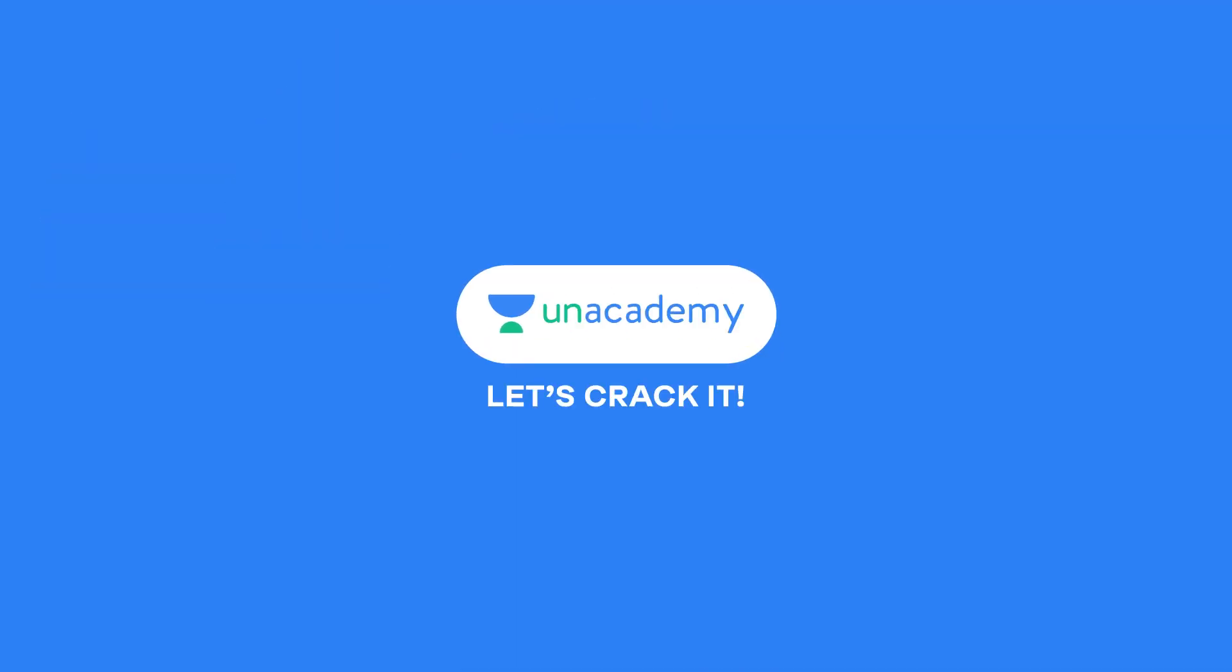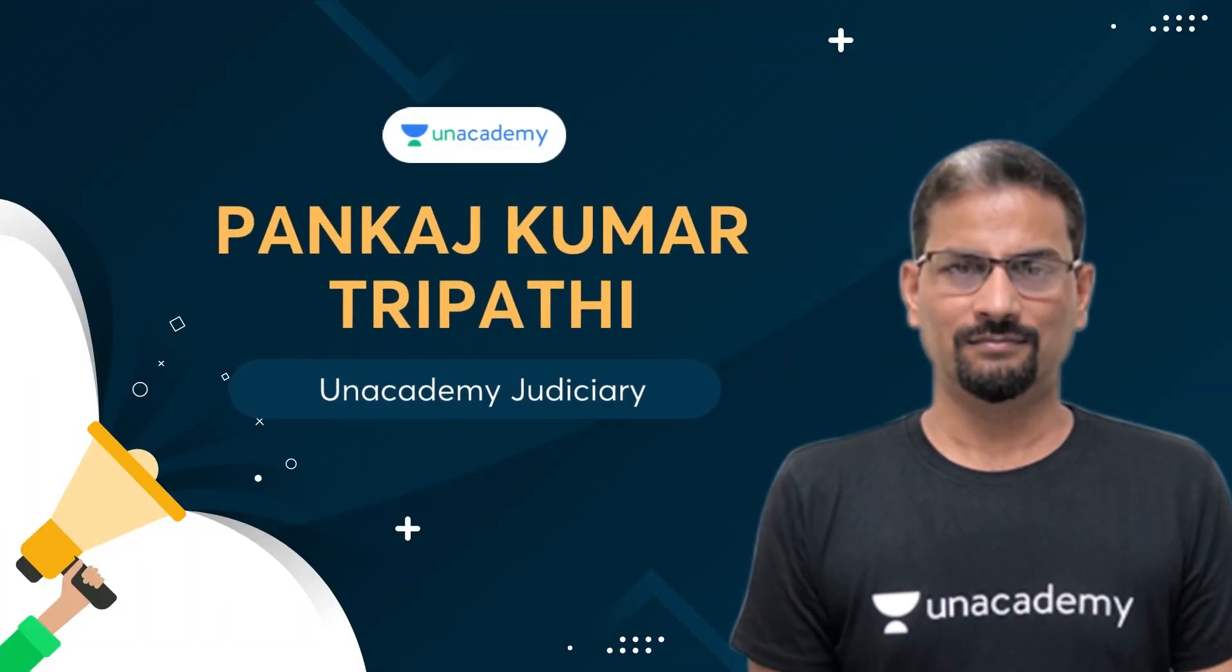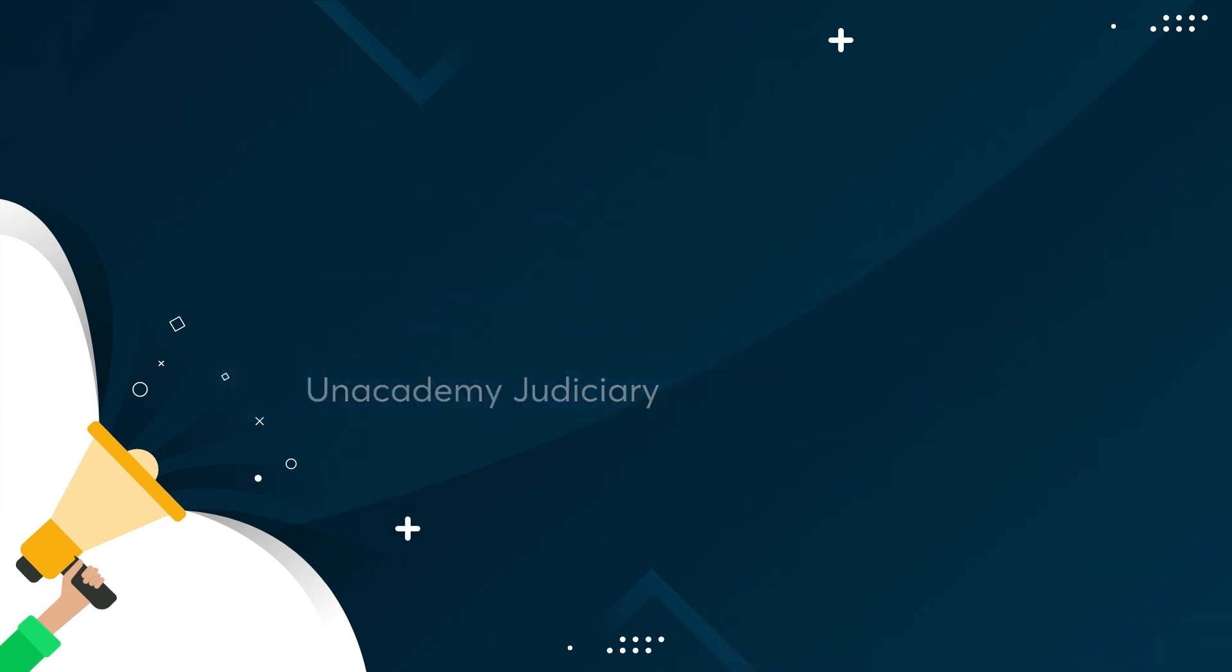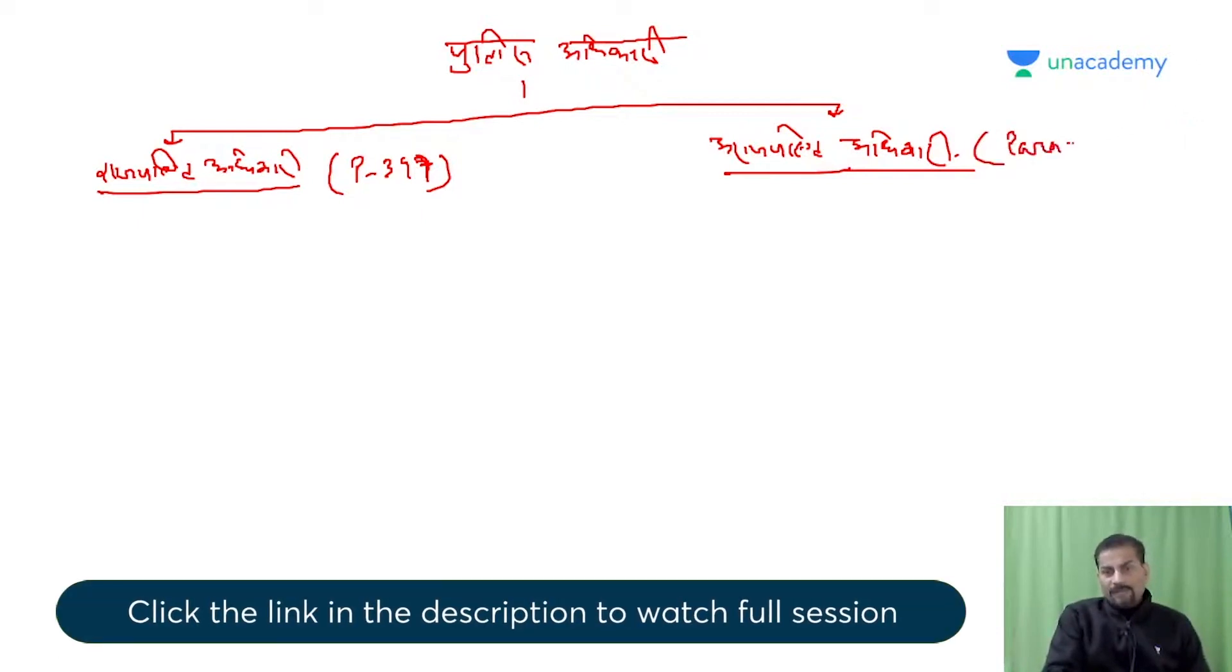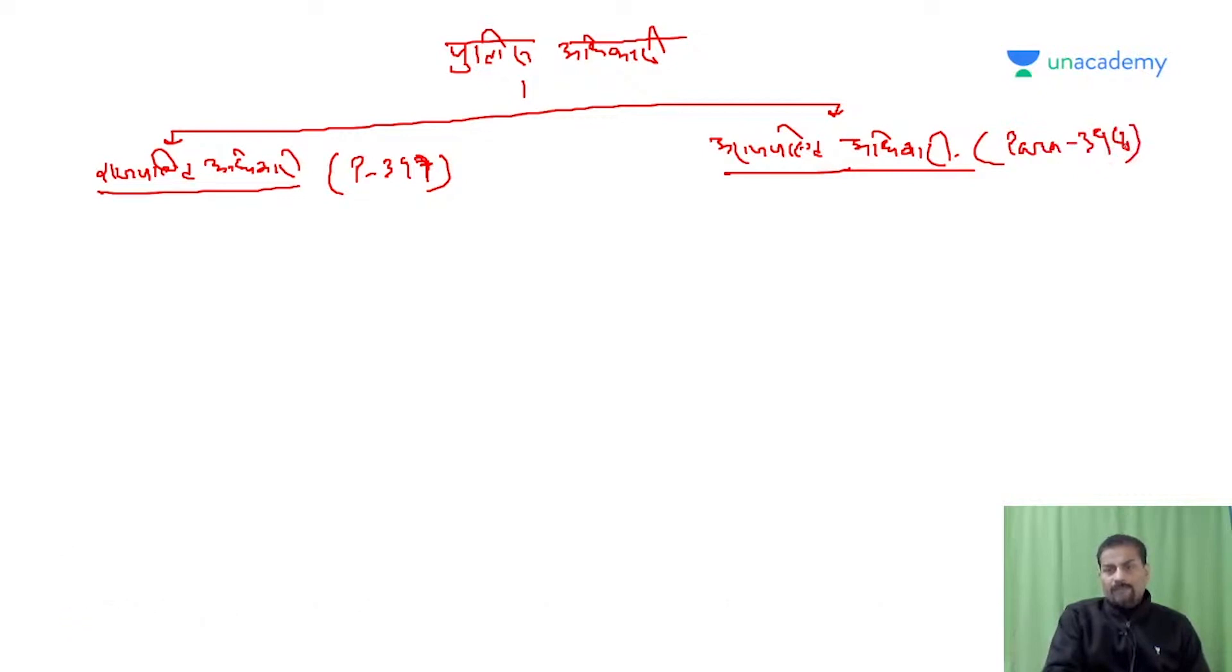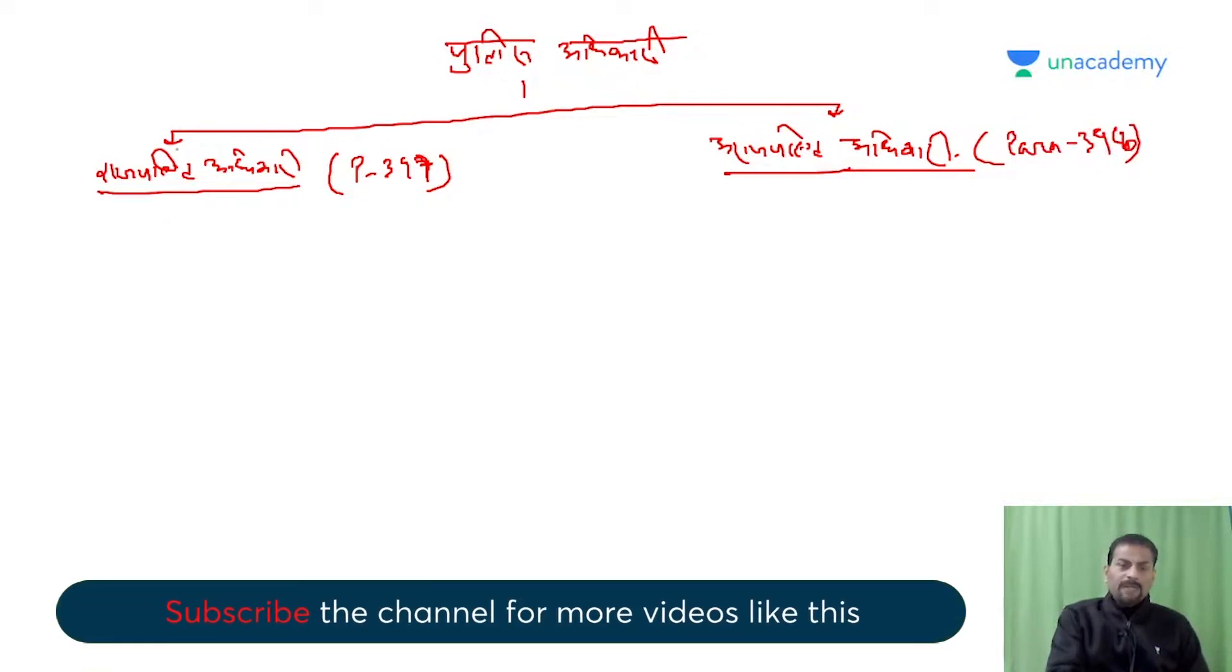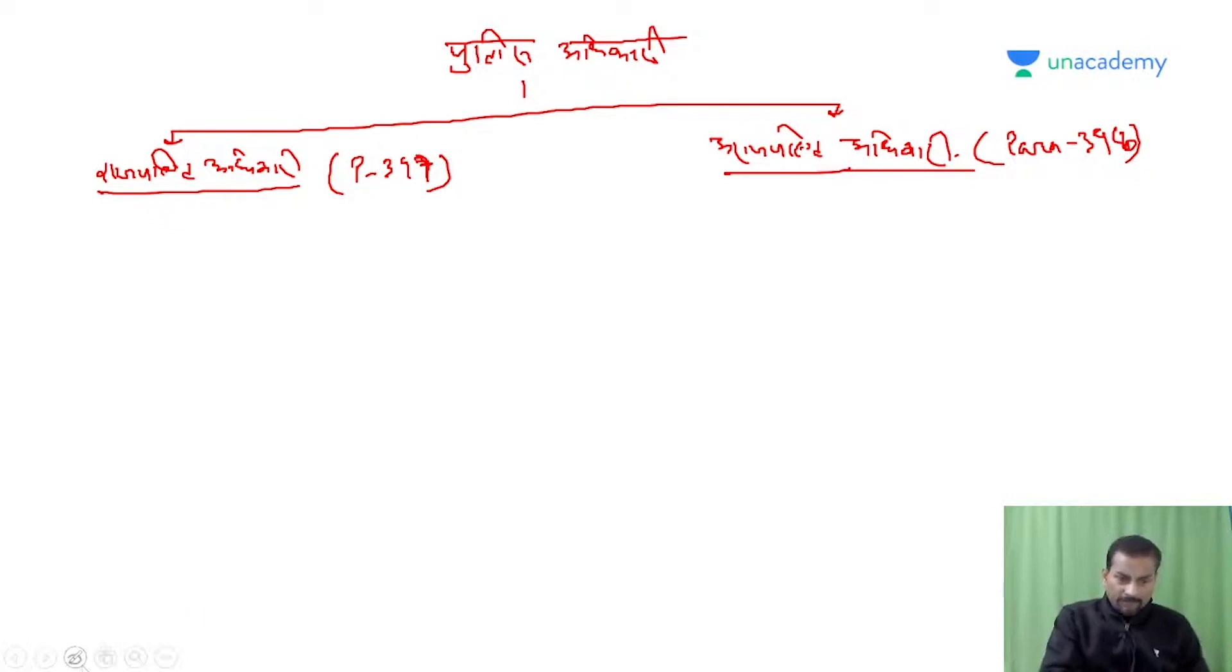Unacademy, let's crack it. Ab gazetted ko aap kaha se paate hain? Para 397. And non-gazetted Para 398, important ho gaya. Aap apna notes banate chaliye. This is Para 397 and for gazetted officer, for non-gazetted officer it is Para 398.